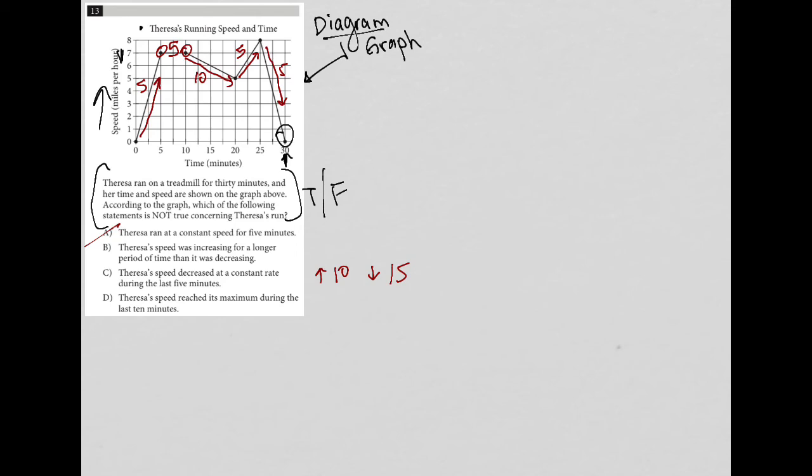So Teresa's speed was increasing for longer. No, that's actually not true, which means this is most likely going to be the correct answer, but let's just try C and D as well.